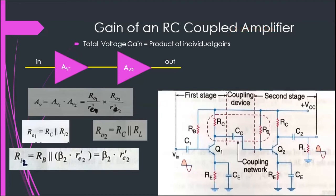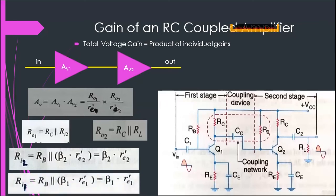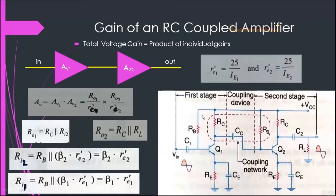So RI2 is approximately equal to β2·RE2', which is almost equal to RL. Likewise, RI1, the input resistance of stage one, is RB parallel β1·RE1', where β1 is the current amplification factor of transistor 1 and RE1' is the emitter diode resistance of transistor 1, and this equals β1·RE1'. RE1' and RE2' can be calculated using the formula 25/IE1 and 25/IE2 respectively, where IE1 is the emitter current of transistor 1 expressed in milliamperes, and IE2 is the emitter current of transistor 2 also expressed in milliamperes.